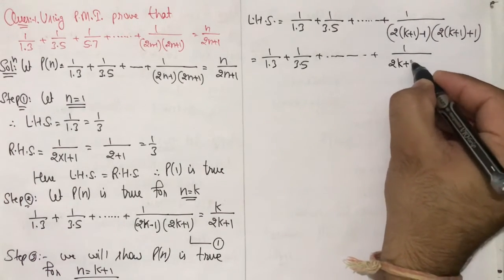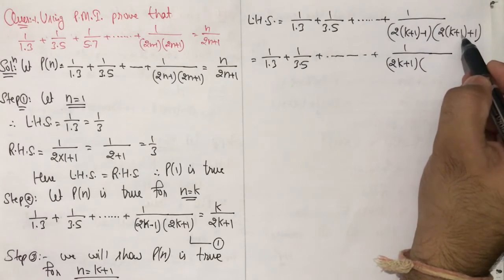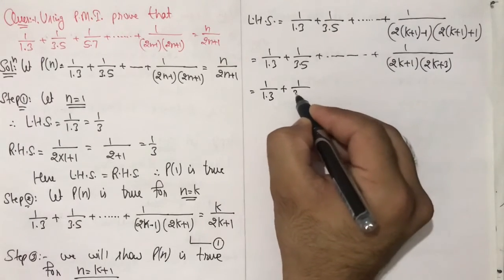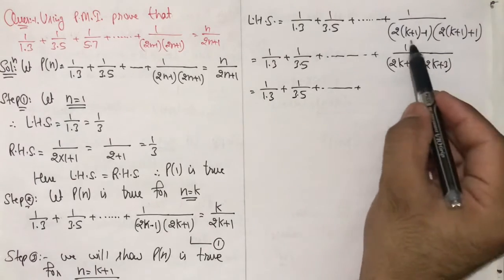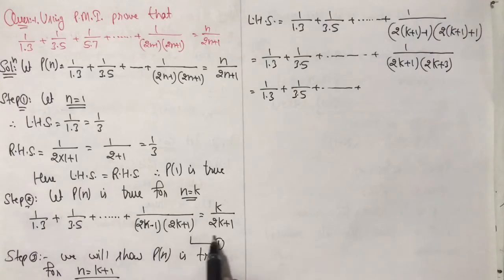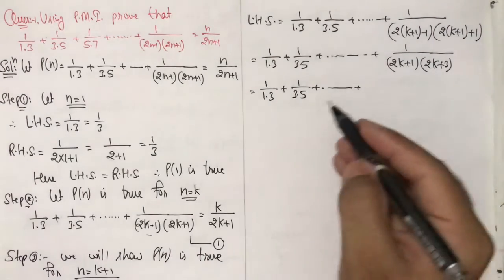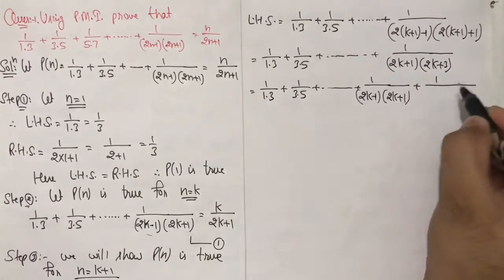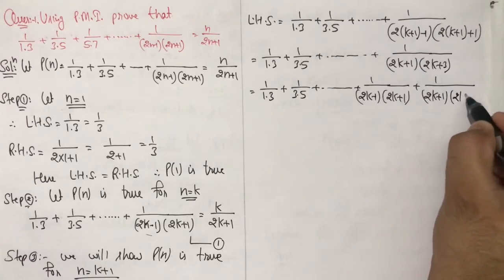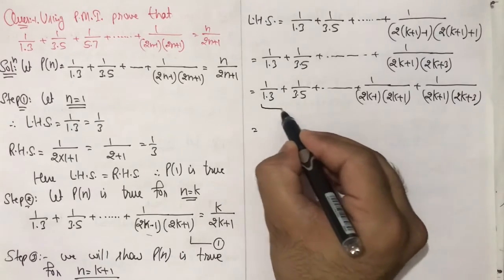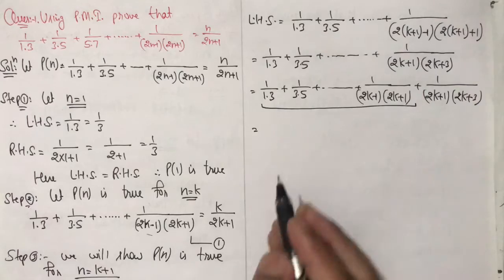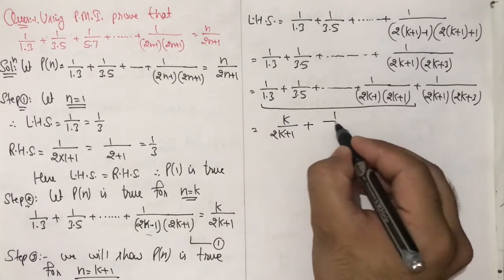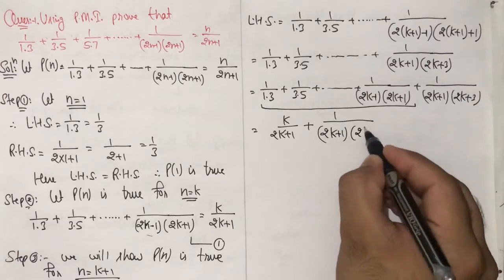This equals 1/(1×3) + 1/(3×5) + ... + 1/((2k−1)(2k+1)) + 1/((2k+1)(2k+3)). The sum up to the second-to-last term equals k/(2k+1) from equation (1). So we have k/(2k+1) + 1/((2k+1)(2k+3)).